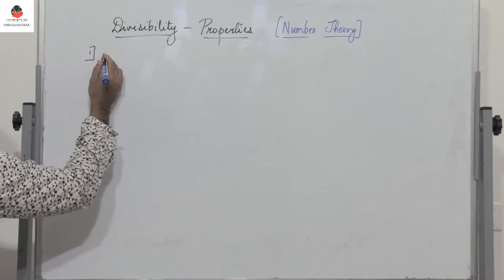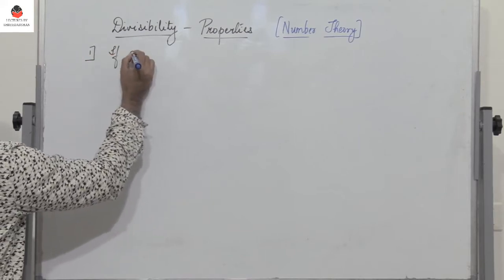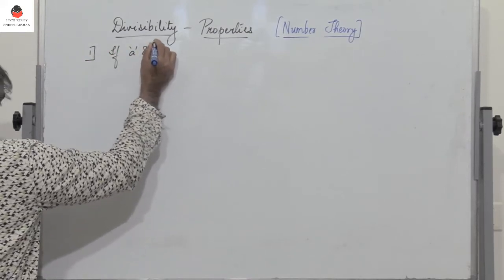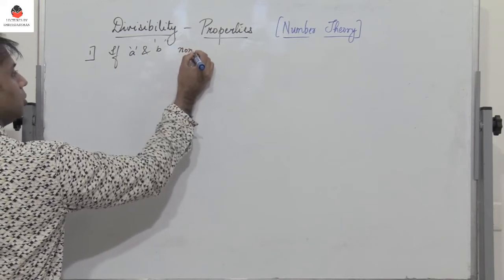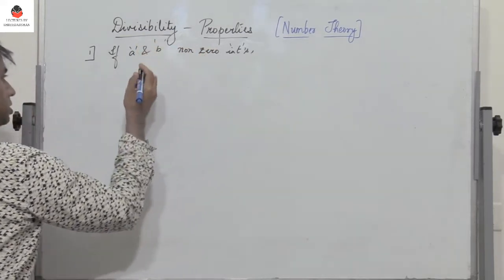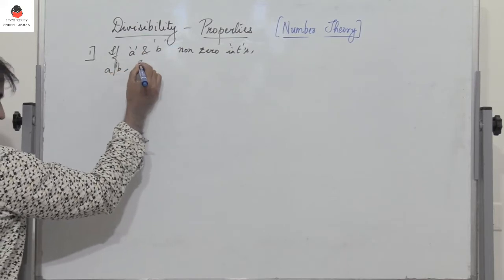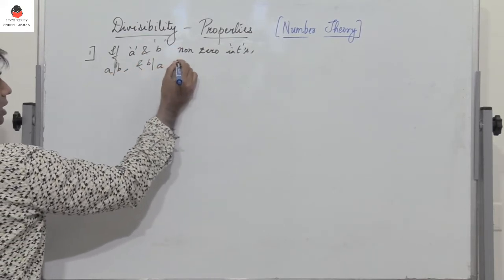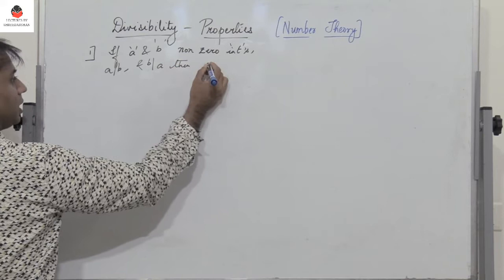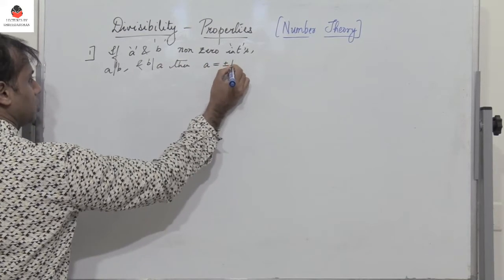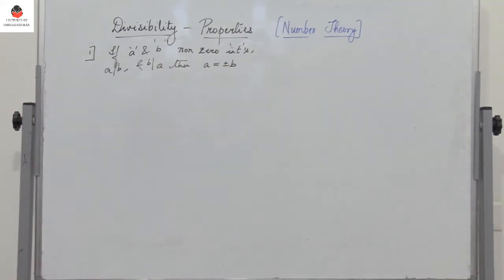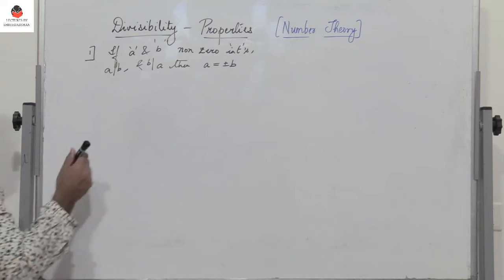The first property: if A and B are non-zero integers such that A divides B and B divides A, then we can say that A is equal to plus or minus B. So here A and B are non-zero integers, A divides B, and B divides A. Let us see the proof.